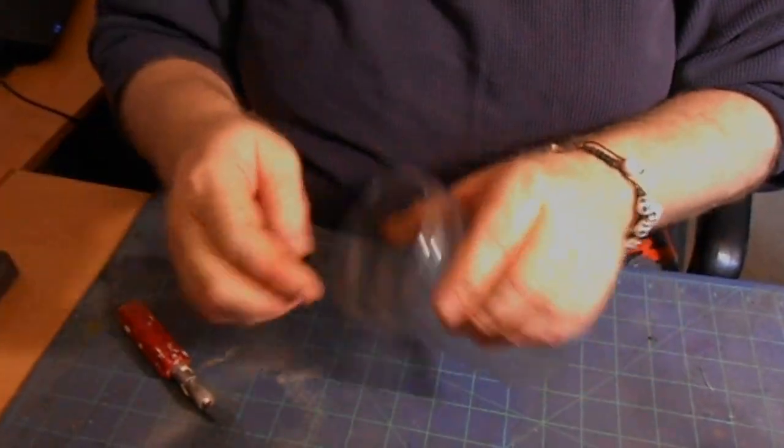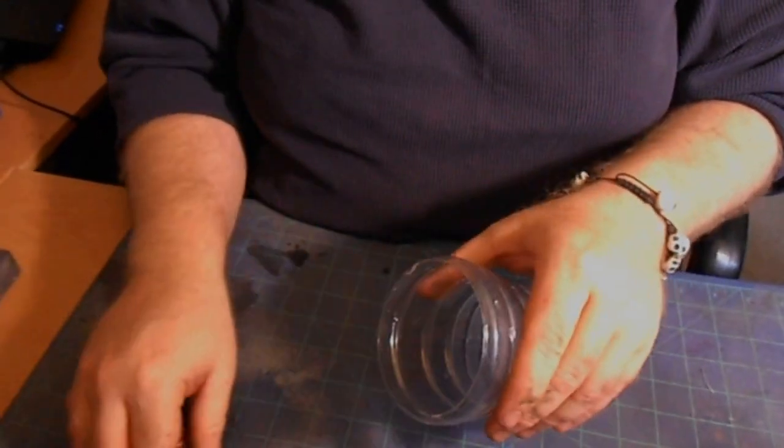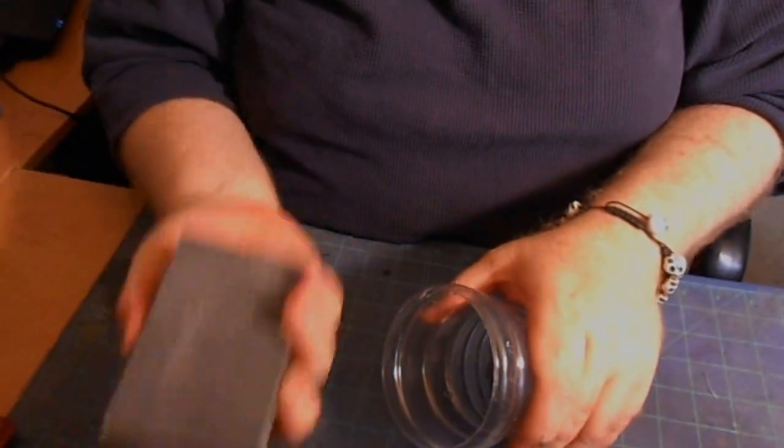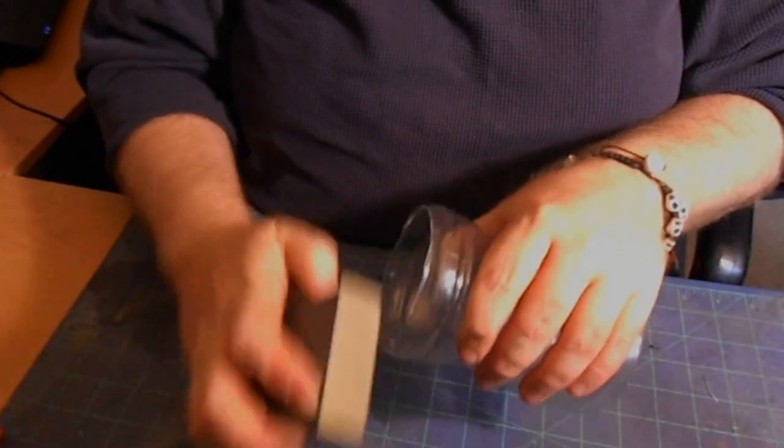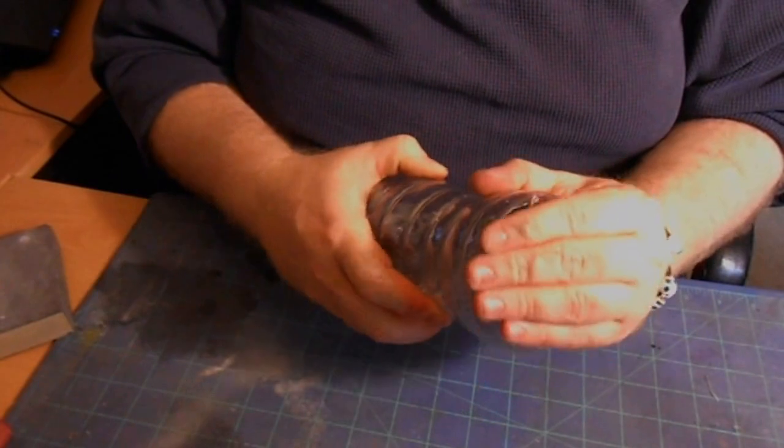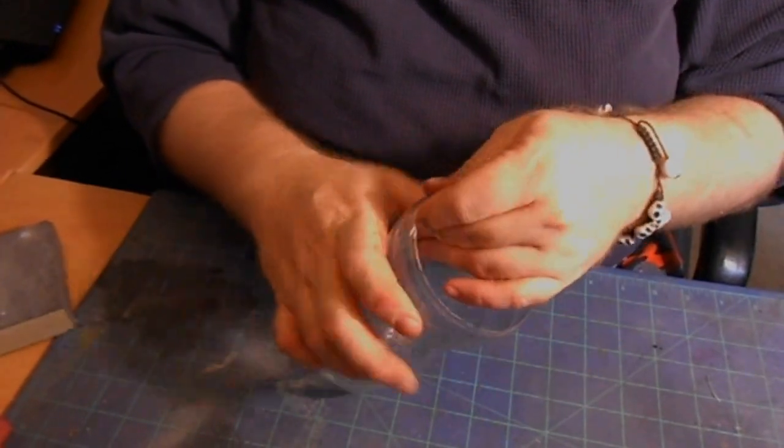So once you kind of have it to this point, you can go back around and clean up that flashing more with your X-Acto blade. I'm not necessarily going to show you that right now. And you just kind of sand that edge to help pull those sharp edges down, so that you're not mouthing that really hard or anything.